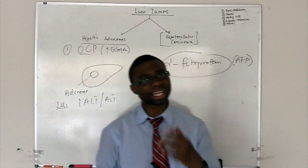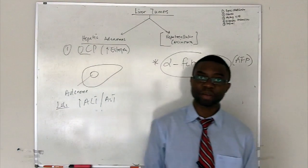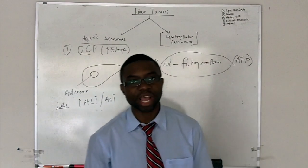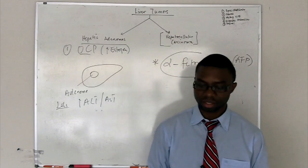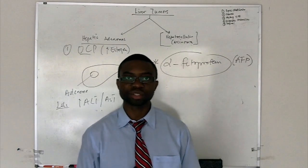So what complications can really come from patients having hepatocellular carcinoma? GI bleed, they can have liver failure and also metastasis. And that is the end of our lecture.